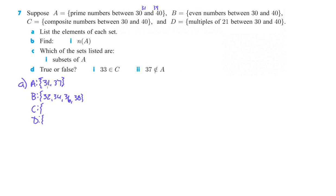C, composite numbers between 30 and 40. So those are all the numbers that aren't prime, so it's all the numbers between 30 and 40 besides 31 and 37. So we'll list all those off.